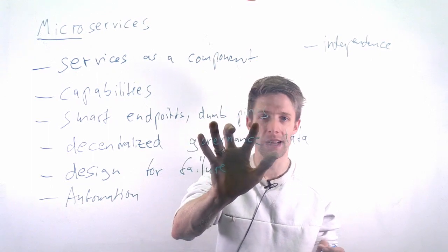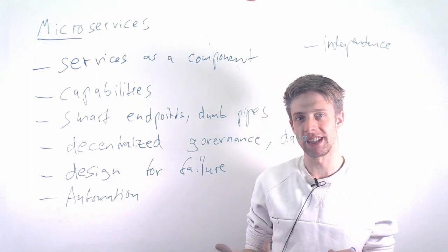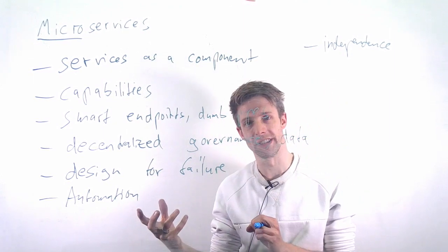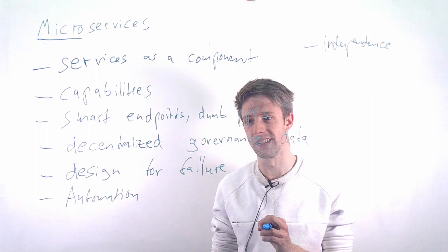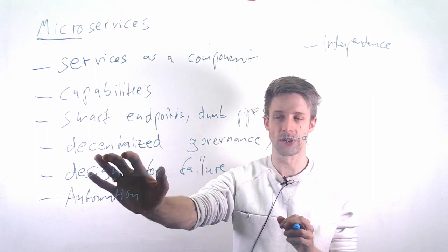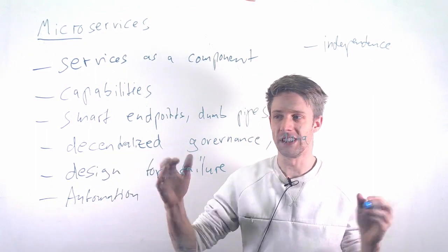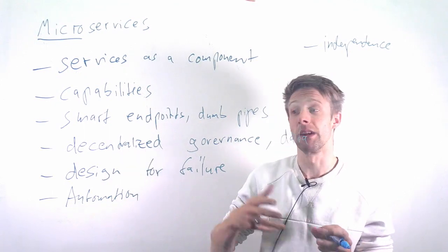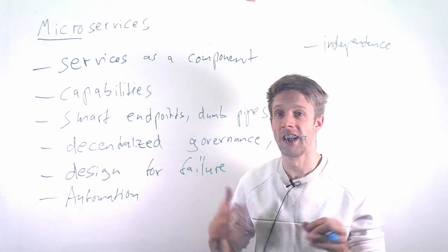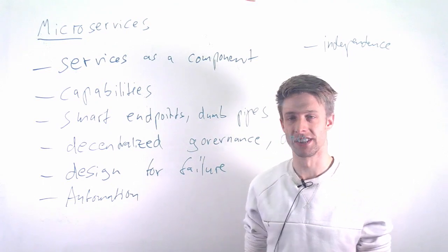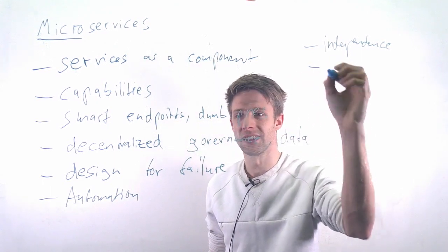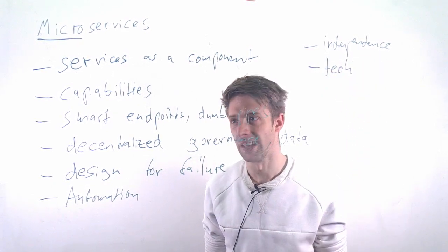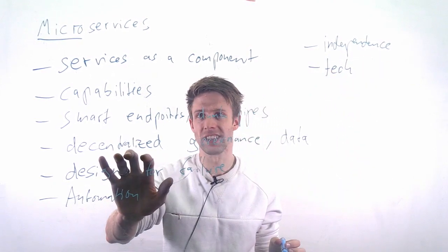If you, for example, manage this dumb pipes very well, you can make your own implementation decisions without having to communicate all the time. How should the interface look like? How do we change this? Similar with the decentralized governance. So if there is not a single database, you don't have to have these discussions about, okay, we need to change the database schema. How do we do this? You can decide that yourself.